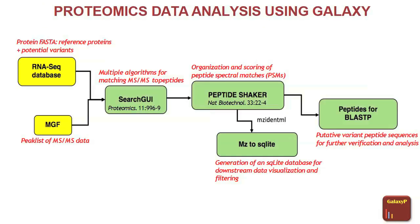In the second part, you have your RNA-seq database or protein FASTA generated from your RNA-seq data. You have your MGF files acquired from the same data and now you search it with a tool called Search GUI, which has at least nine different search algorithms in it. It helps you identify peptide spectral matches. Then it uses Peptide Shaker to perform both FDR analysis and protein grouping. There is also a tool called MZ2-SQLite for further analysis, which generates peptides for BLAST-P analysis.